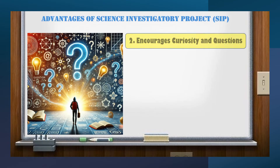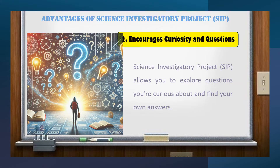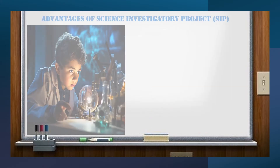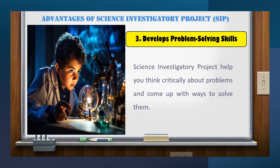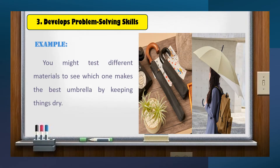Second, they encourage curiosity and questioning. A Science Investigatory Project allows you to explore questions you're curious about and find your own answers. For example, if you wonder why some fruits rot faster than others, you can design an experiment to investigate. Third, it develops problem-solving skills. Science Investigatory Projects help you think critically about problems and come up with ways to solve them. For example, you might test different materials to see which one makes the best umbrella by keeping things dry.